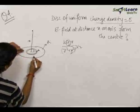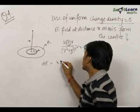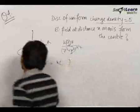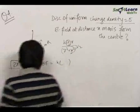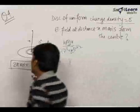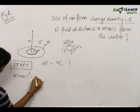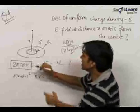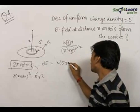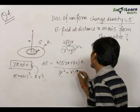Using this, we write down the small electric field dE due to the small ring at this point as k into the charge of the ring. The charge of the ring can be written as sigma into the area of the ring. The area of the ring can be written as 2πr·dr — 2πr is the circumference of the ring into dr. You can also compute it as π(r+dr)² − πr² to get the same answer. Therefore, dE = k·σ·2πr·dr·x / (r² + x²)^(3/2).